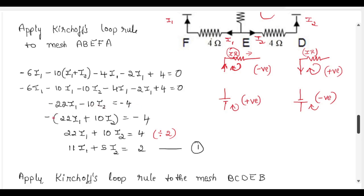Taking the minus outside, the negatives cancel and we get 22I1 plus 10I2 equals 4. Dividing by 2 gives us 11I1 plus 5I2 equals 2.